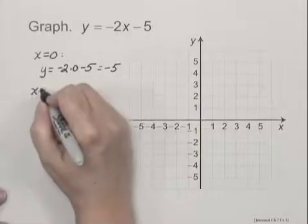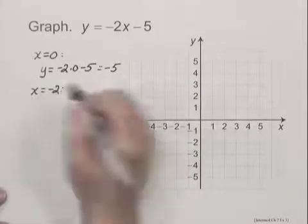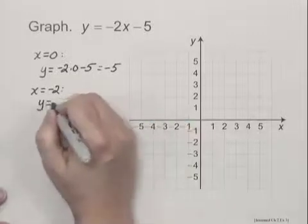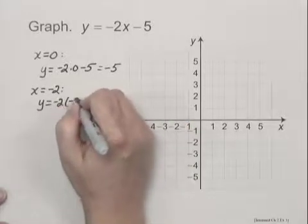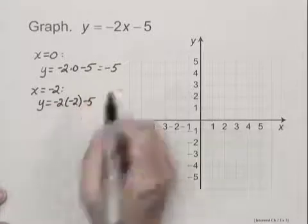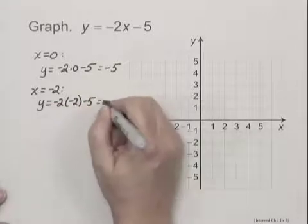Let's pick another value for x. When x is negative 2, we have y equals negative 2 times negative 2 minus 5, which is 4 minus 5 or negative 1.